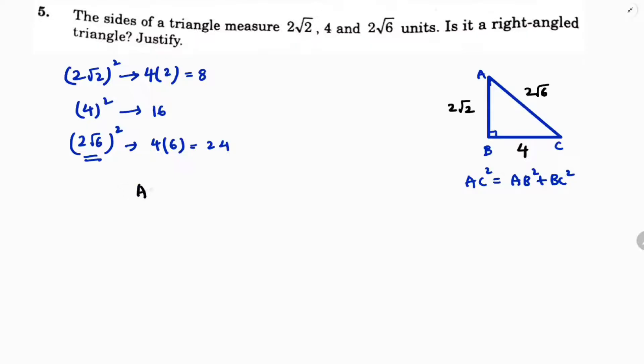Now if you substitute, AC square equals AB square plus BC square.